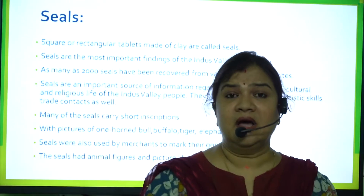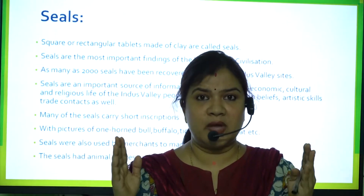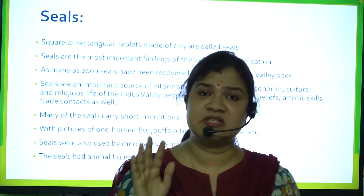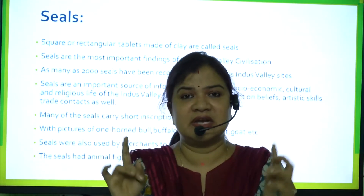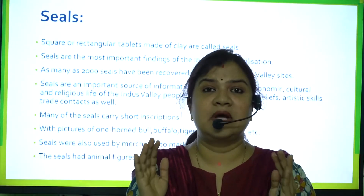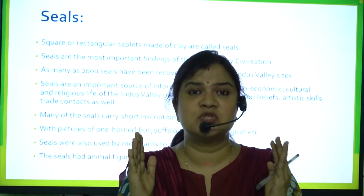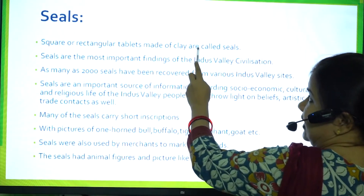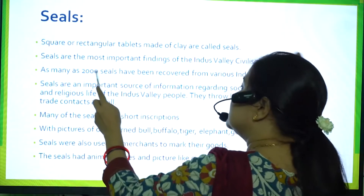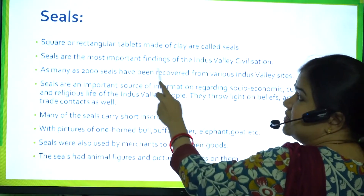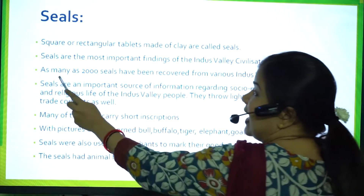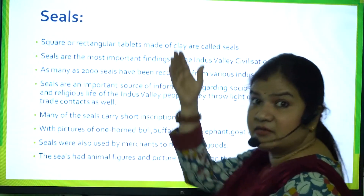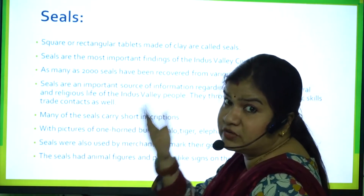A seal is a rectangular or square tablet made of clay — at times even circular — used as an important artifact of the Indus Valley Civilization. Seals are the most important findings of this civilization. As many as 2000 seals have been recovered from various Indus Valley sites during excavations.